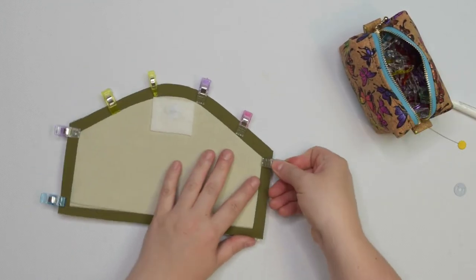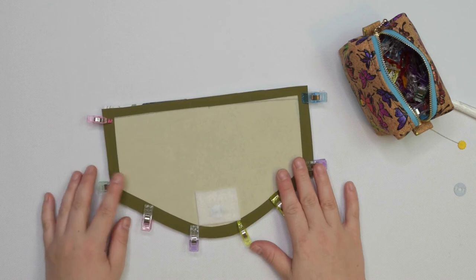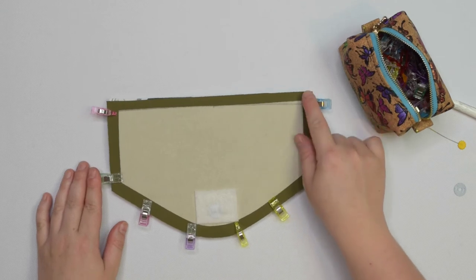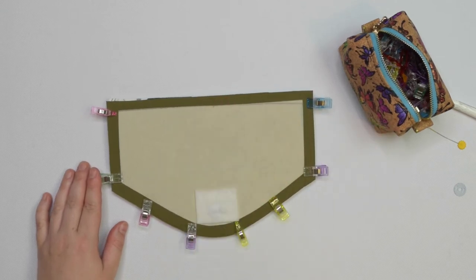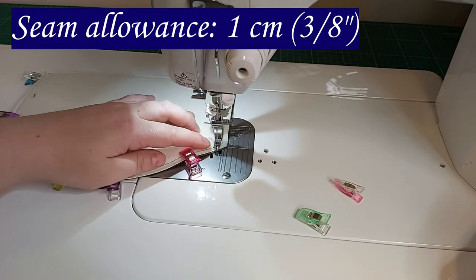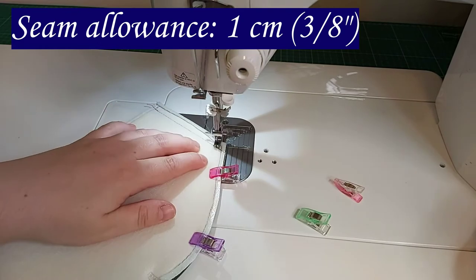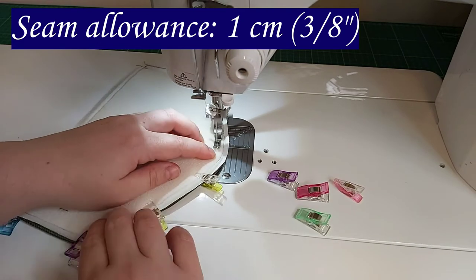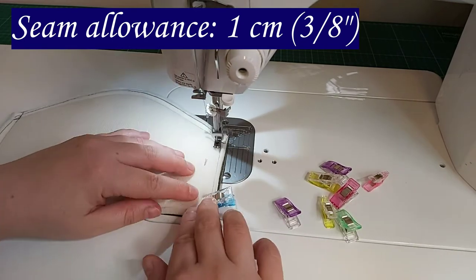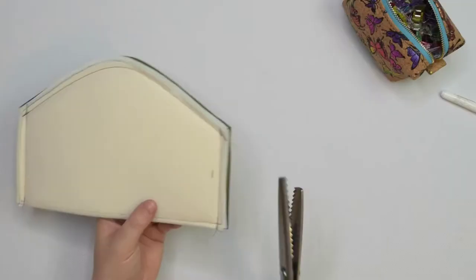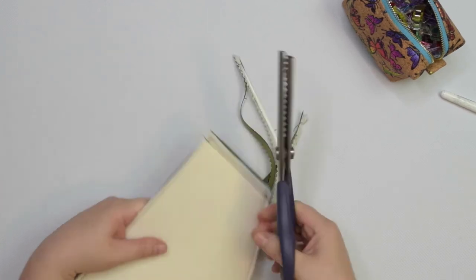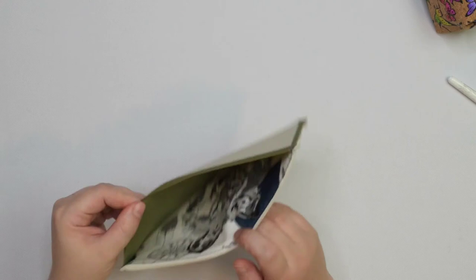Using 1cm seam allowance we are going to stitch along the side, the bottom curved edge and then the other side. Leave the top edge unstitched so we can turn the flap right side out. Trim the seam allowance by half, then you can trim off any excess stabilizer to reduce the bulk. Now we can turn the flap right side out.